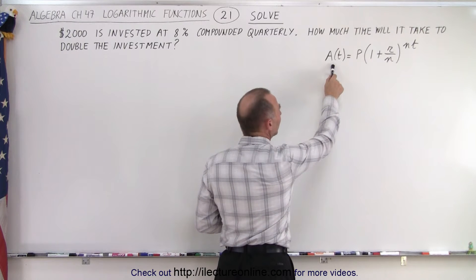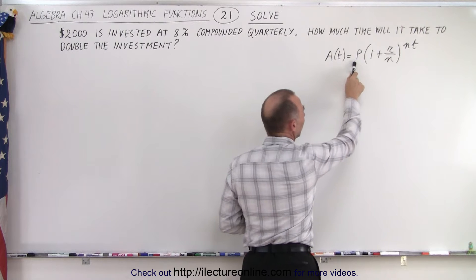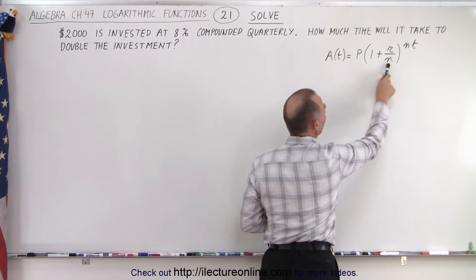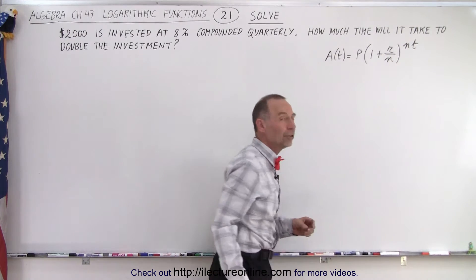This is the amount that you end up with when you invest this amount of principal and you multiply times 1 plus the rate divided by the number of compounds per year times n times t, t being in years.